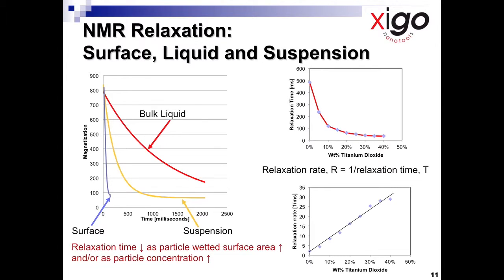The relaxation time changes with not just the particle-liquid interaction, but also the concentration of the particles and the wetted surface area. The relaxation of a suspension depends on two factors: the wetted surface area — that is, the particle size — and how much we have. On the right-hand side, we see the relaxation time decreases as the concentration increases. This is shown here as an example for titanium dioxide particles.